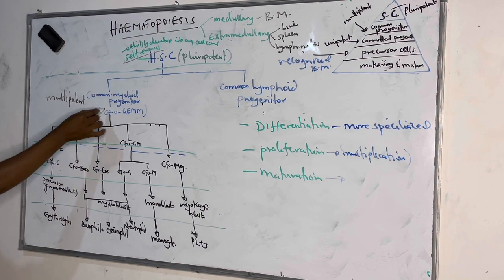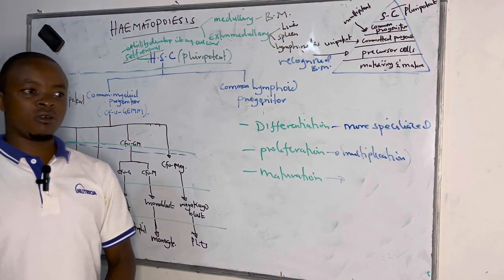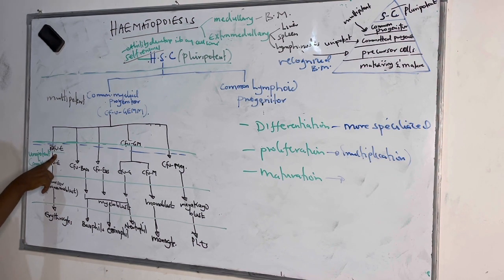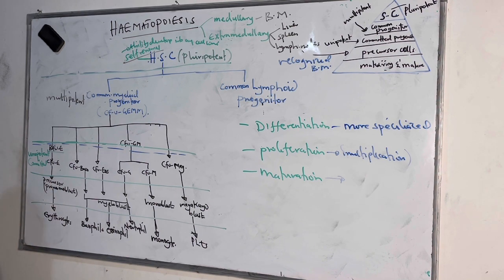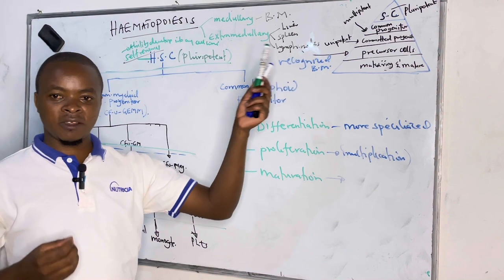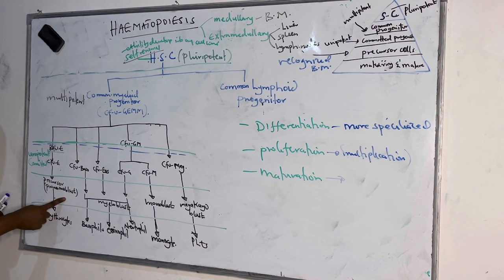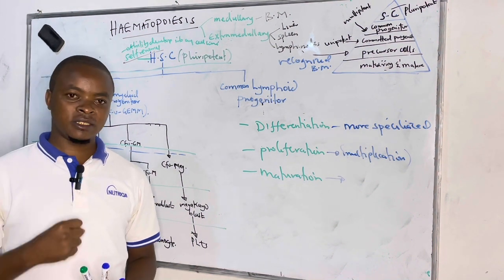For erythropoiesis, the common myeloid first gives rise to the burst-forming unit erythroid (BFU-E) — called 'burst' because it was first discovered in the bursa of Fabricius in birds. This continues to form the colony-forming unit erythroid (CFU-E), which gives rise to the precursor. The precursor for erythropoiesis is the pronormoblast, which gives rise to the basophilic normoblast, then the polychromatic normoblast, then orthochromatic normoblast, reticulocyte, and finally the mature red cell.